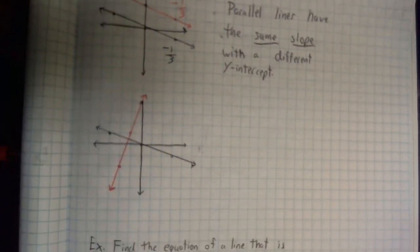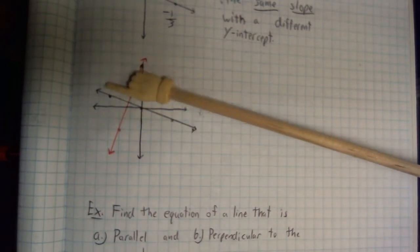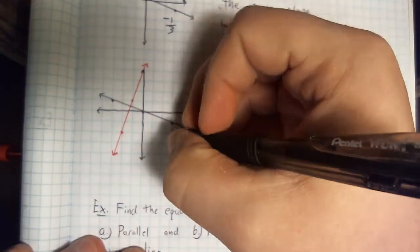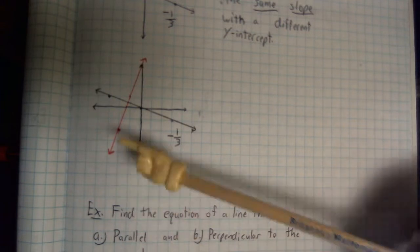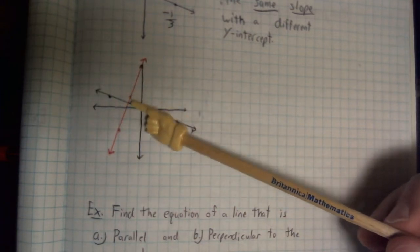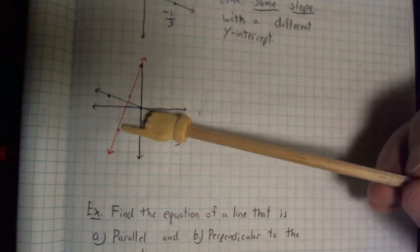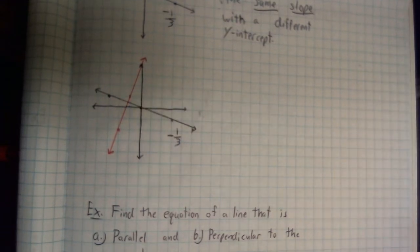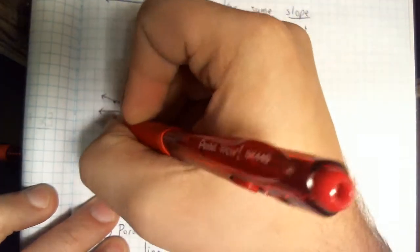Now we're going to look at perpendicular. My given line right here — we notice again it has a slope of negative one third. The line that we see is perpendicular to it. I notice that this is a 90-degree angle all the way around, so this is definitely perpendicular. If I look at my slope, I'm going up three and over one. So that's a slope of positive three over one.